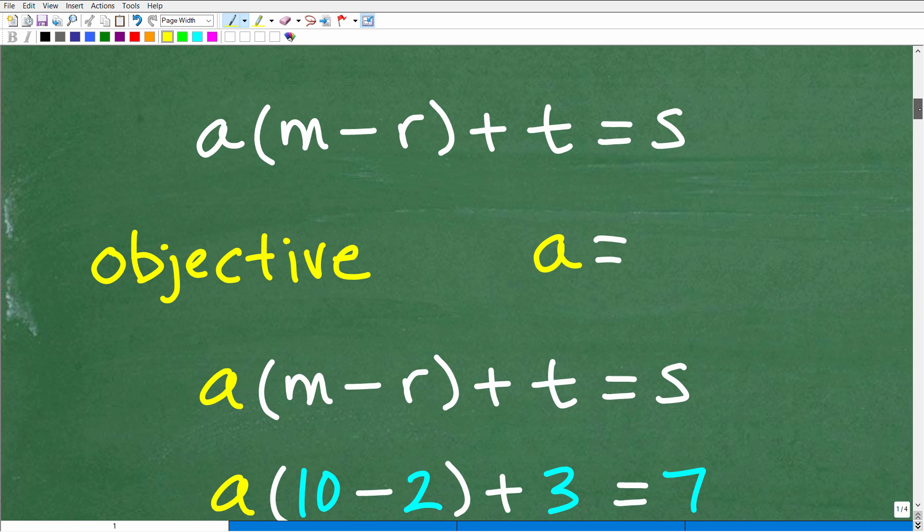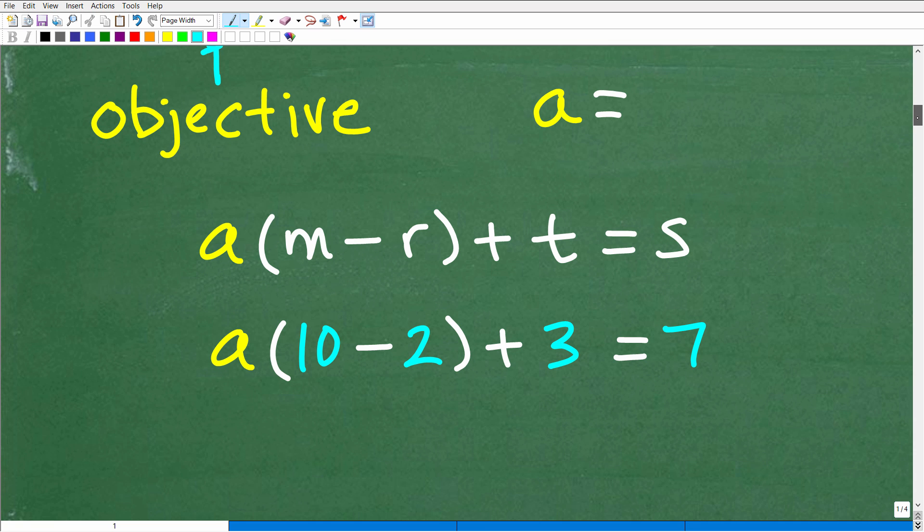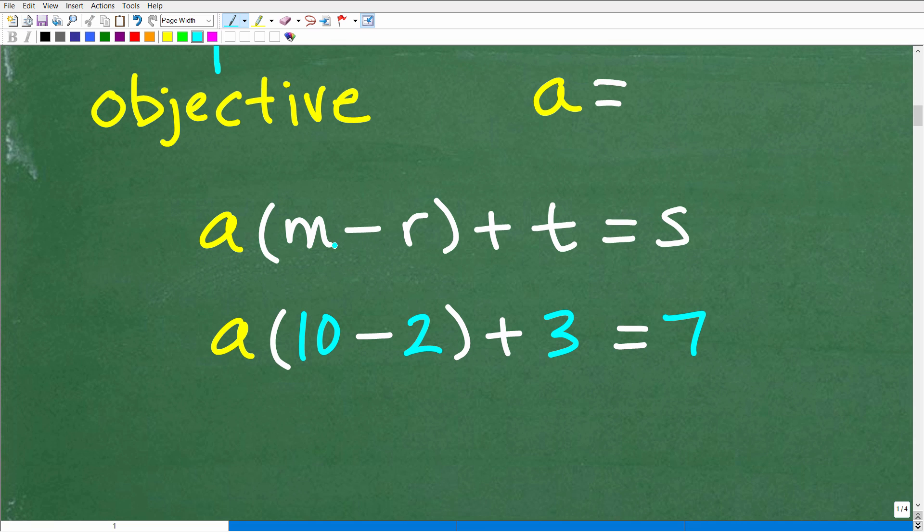So with that in mind, let's go ahead and get into this problem. So again, the objective here is to solve for A or to write this in terms of A. So I'm just going to concentrate on that A as the variable. And so let's go ahead and get into the problem. Here it is A times M minus R plus T is equal to S. So conceptually, again, you can kind of just think in your mind, let's say M and R and T and S would just represent numbers.